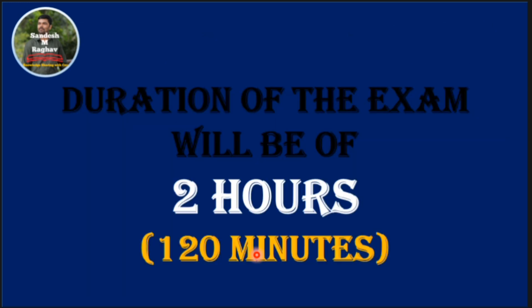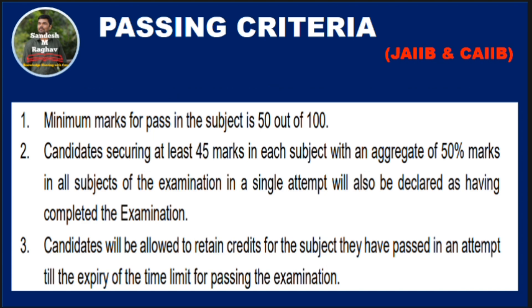You will get 2 hours — that is 120 minutes — to attend all the questions. The passing criteria for JAIIB and CAIIB: you need to score a minimum of 50 marks out of 100 in each subject. However, if in one subject you score 45, another 50, another 50, and another 55, giving an overall aggregate of 50%, then that single attempt is also considered as a pass.